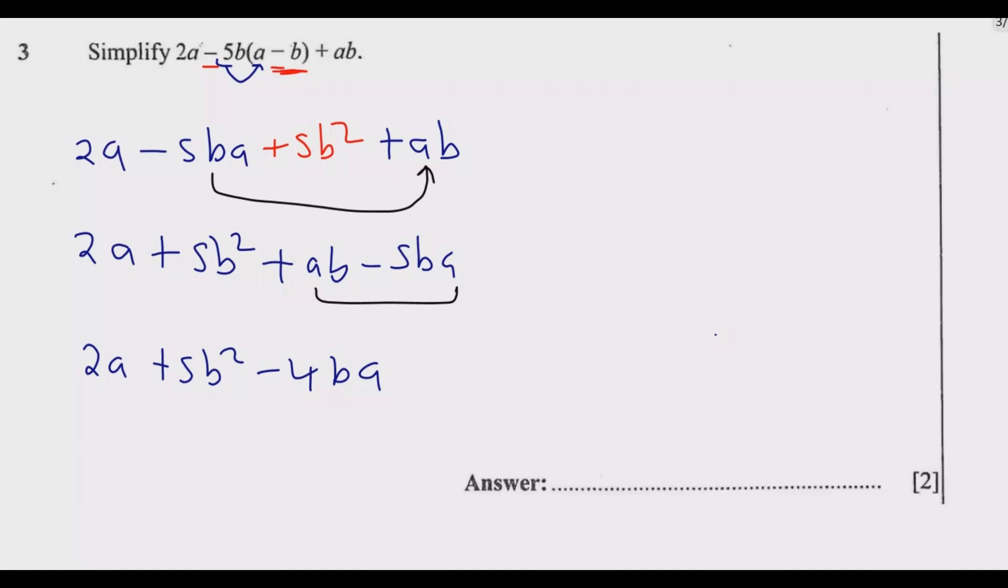At this point, if you notice, we have a 2, we have a 5, we have a 5, so we cannot simplify further than this. To write it neatly, it will just be 5b² (because b has the highest exponential), then minus 4ba, then plus 2a. At this point, this one is more simplified.